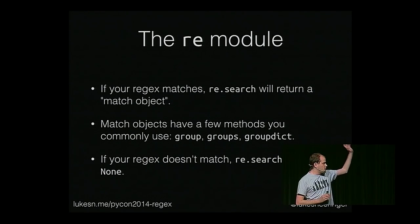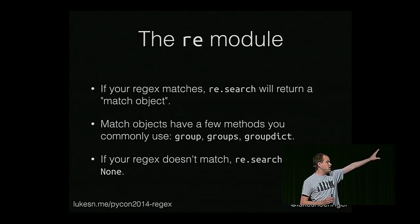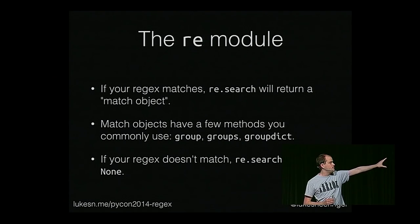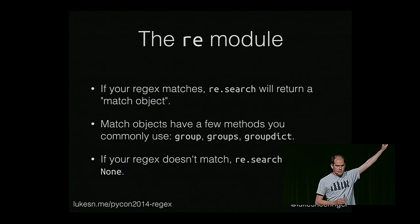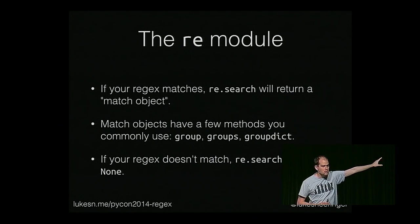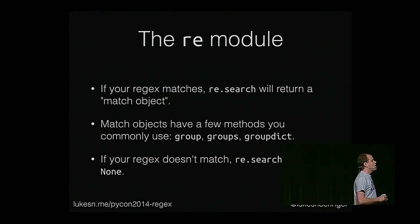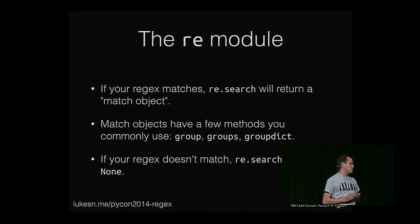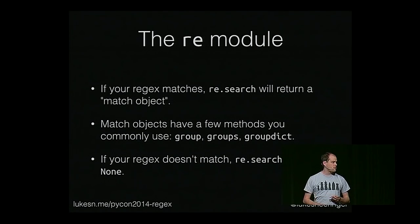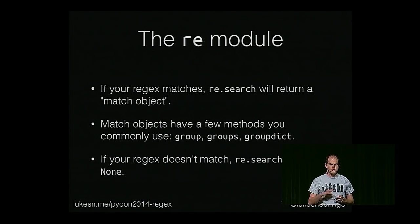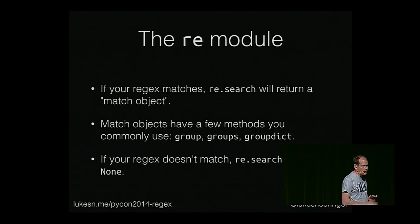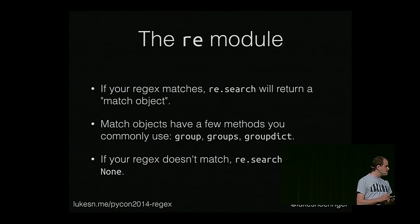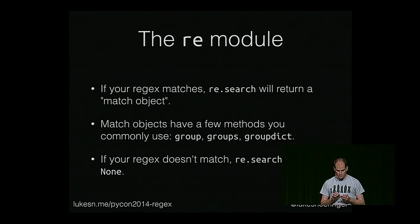The rules for RE.search are pretty straightforward. If your regex matches, you'll get back a match object. Match objects have a few methods you'll commonly use, basically groups and groupdict. If your regex doesn't match, RE.search is just going to return None — you're not going to get an exception. So you'll want to do an if-block check for it most of the time. There is no way to get an exception for a non-match in the RE module.